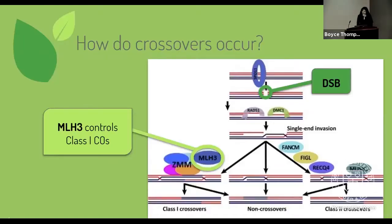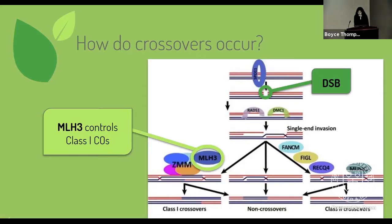The next question is how a crossover would occur. Basically, what happens is a double-stranded break is formed at the beginning. A few steps later, depending on the type of proteins involved in repairing this double-stranded break — one protein we specifically study is MLH3 — that leads to a class one style crossover, or it could also lead to no crossover at all.